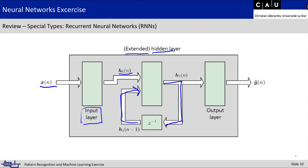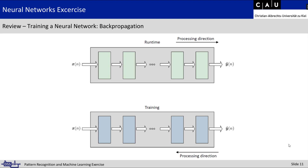This temporal component has nice properties: the recurrent neural network can learn temporal patterns and classify them. After some hidden layers, we have the output layer that performs normal output layer operations, such as limiting the range, producing the output feature vector y-hat of n.